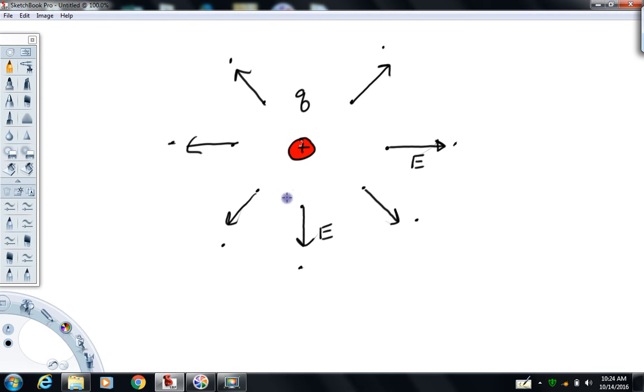So there's the electric field vectors at all those different locations. They would be roughly the same length because these points are all roughly, super roughly I guess, but the same distance to the charge.